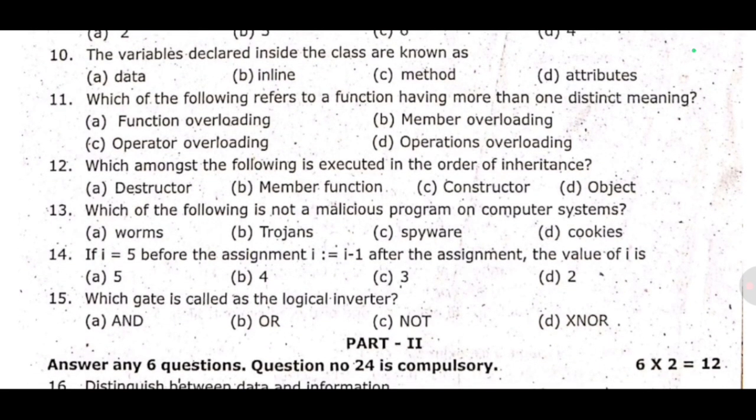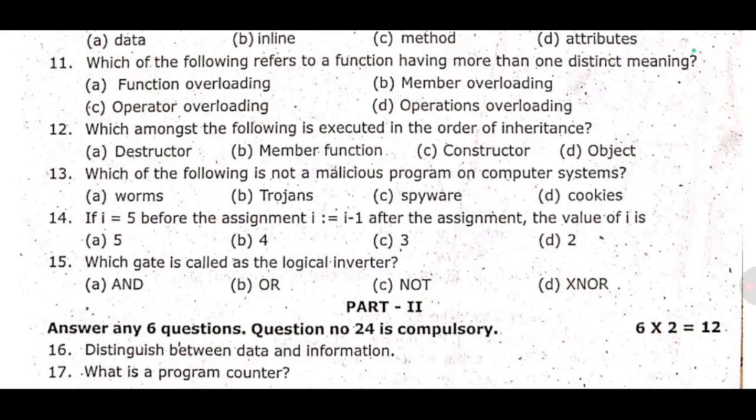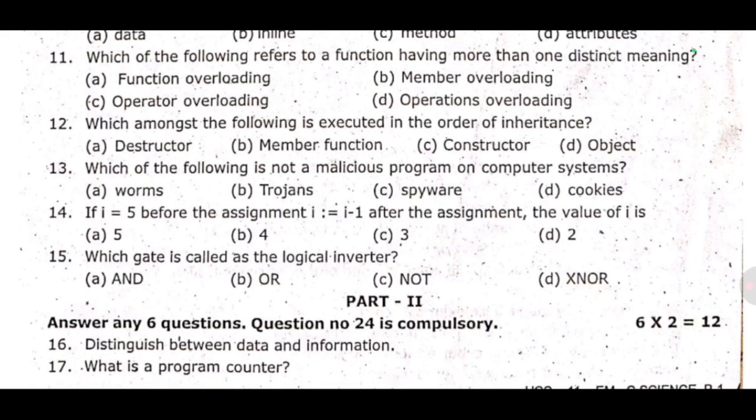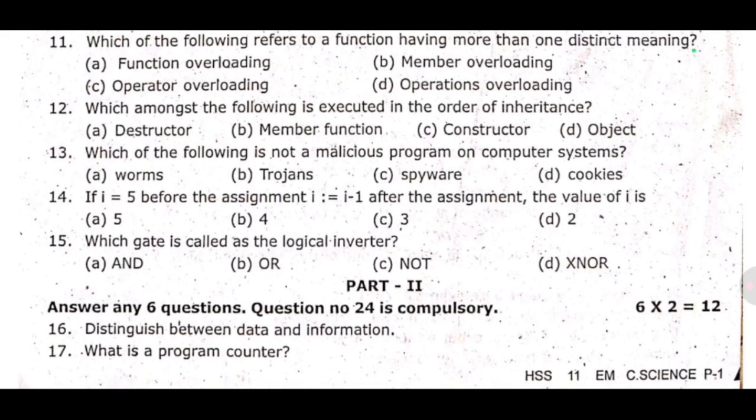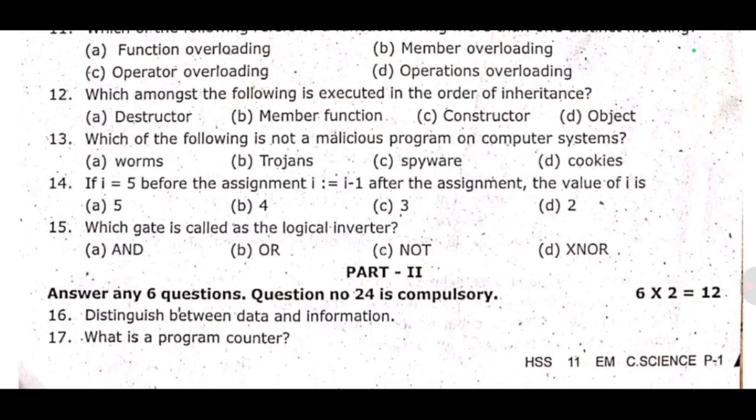Students, you can learn one mark maximum from the book back. So this is part two, two marks, answer any 6 questions. Question number 24 is compulsory. Question 16: distinguish between data and information, most important repetitive question.